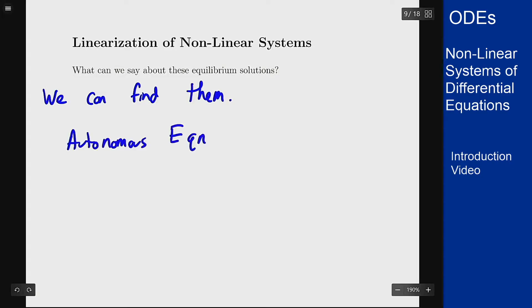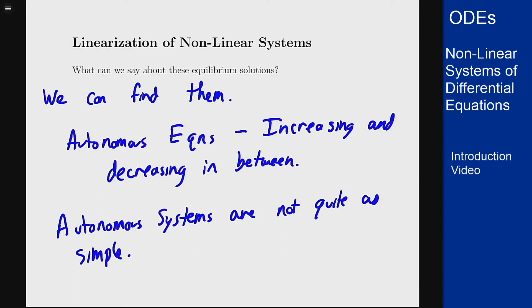For equations we know things were increasing or decreasing in between and that was fine, but for systems we're not quite as lucky—it's not quite as simple as that idea. We can think back to another way to approach autonomous equations as a way to analyze this.